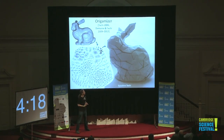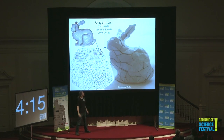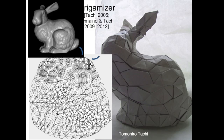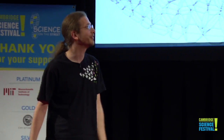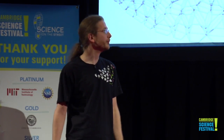An example of something we know on the algorithm side is this system called Origamizer. It's freely available software — you give it a 3D computer model like that bunny in the top left, it gives you a crease pattern which you can fold from a square piece of paper. It takes about 10 hours if you're good, and you get exactly the model you want.